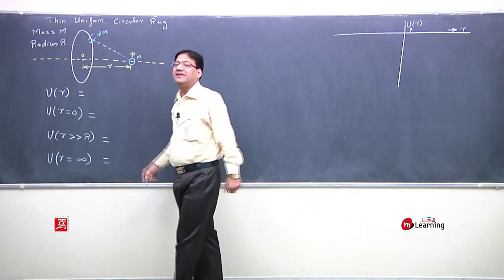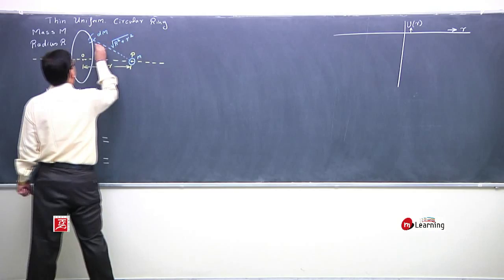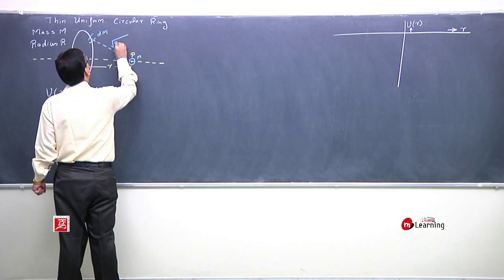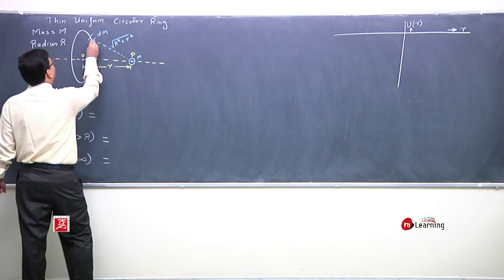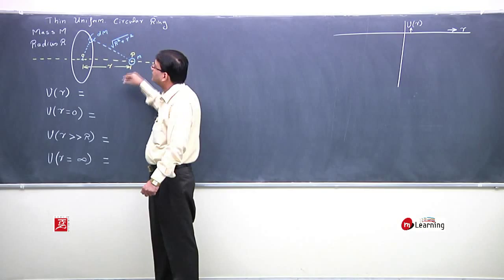We have taken this differential mass dm. This differential mass, its distance from this point is under root of r square plus R square. This distance is this distance, is this distance, this is small r.